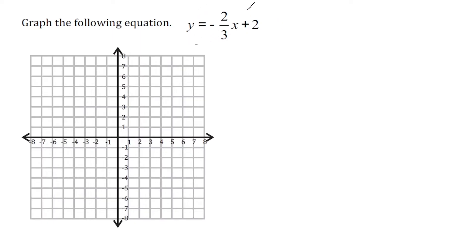Now the constant over here on the end, this is our y-intercept. We know our line is going to cross the y-axis at positive 2. So we're going to make a mark at positive 2, which is right here.